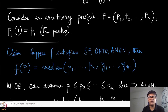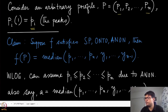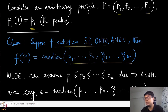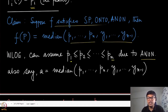Now we consider an arbitrary agent profile p_1 to p_n. We denote by lower-case p_i the peaks of each agent. The claim is that if f satisfies strategy-proofness and anonymity, then f(P) is the median of all agent peaks and the corresponding phantom peaks. By anonymity, we can without loss of generality order the agents in increasing order of their peaks with respect to the common ordering over all alternatives.